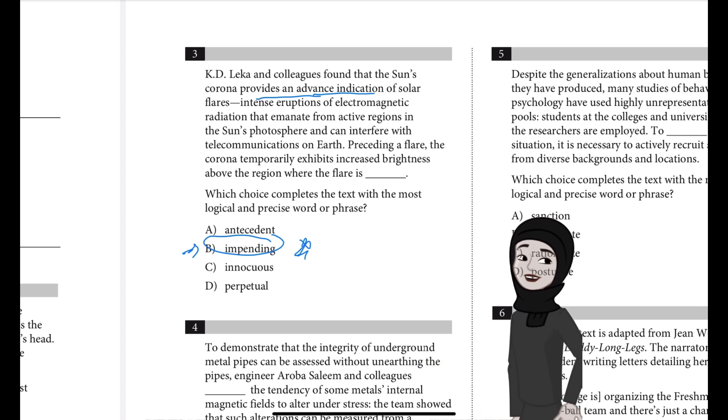The text indicates that this characteristic is increased brightness. So what's going to happen is there's going to be increased brightness in a particular region of the corona before the appearance of the flare. Therefore, in this context, the best answer would indicate that the flare is approaching or impending. So B, impending, is correct.